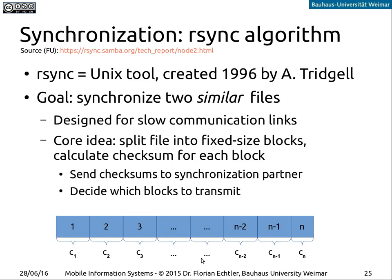Now let's look at how to actually transfer the data. There's the so-called rsync algorithm — rsync is a Unix tool from 1996, so already about 20 years old. The idea is that you want to synchronize two files which are similar over a slow communication link. You split the file into fixed-size blocks, calculate a checksum for each block, and then send just the checksums to your synchronization peer. Based on the checksums, you can then decide which blocks you actually need to transmit.